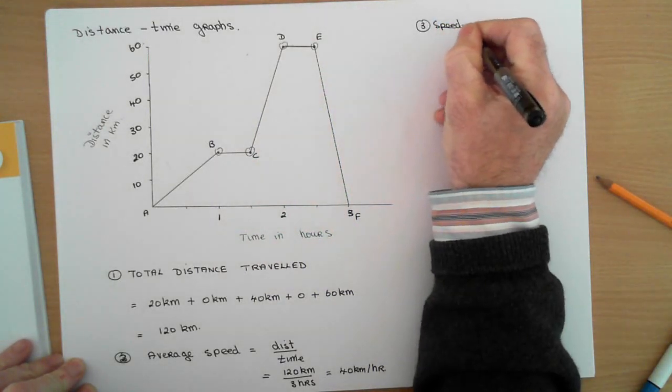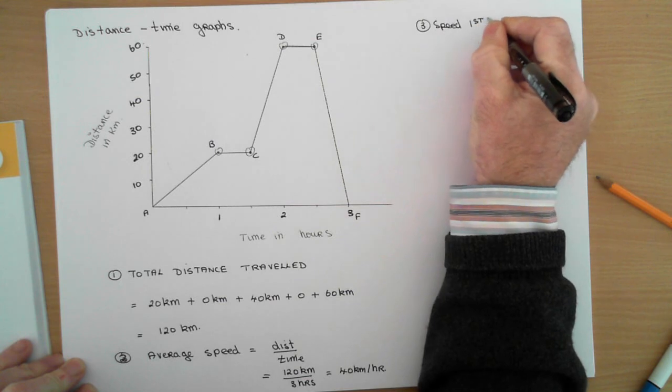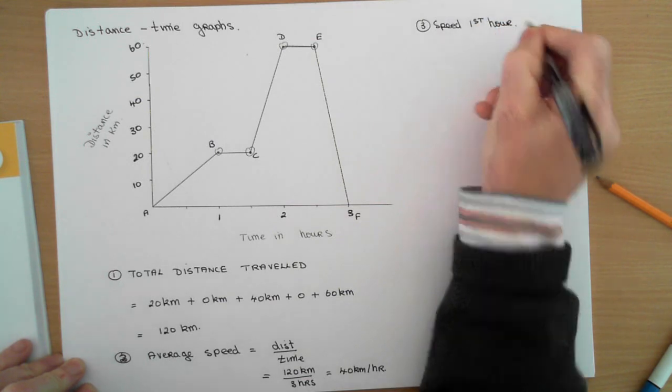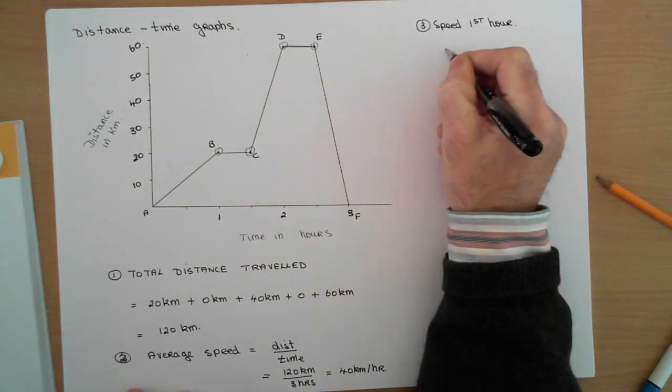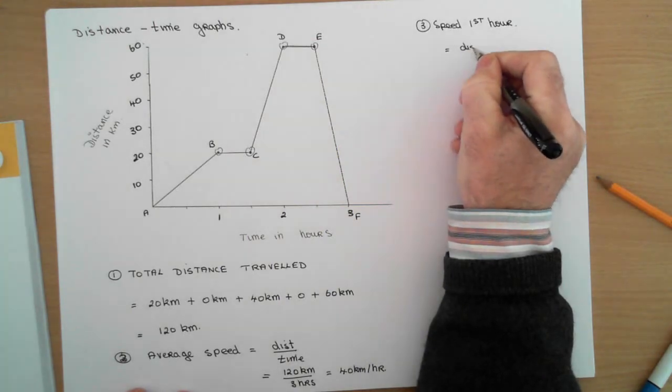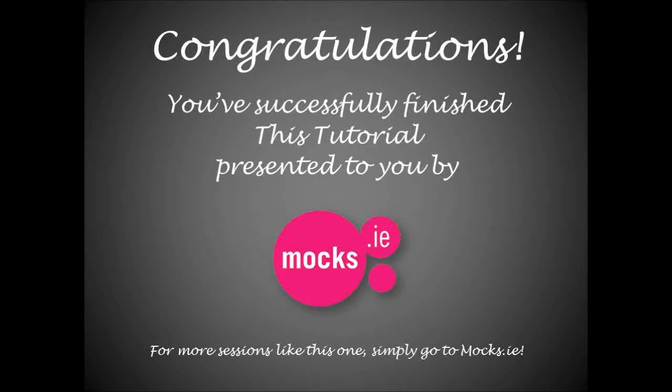How was the speed in the first hour? Well, how do you always work out speed?